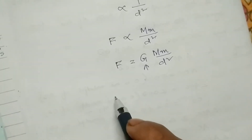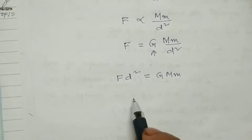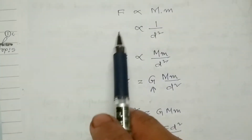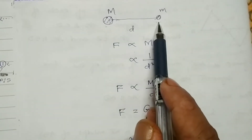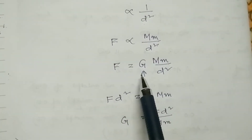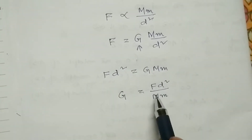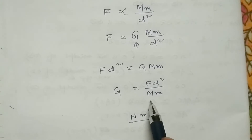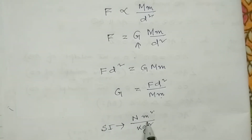Cross-multiplying the formula, we get F times d square equals G times M times m. So capital G equals F times d square divided by capital M times small m. The SI unit of force is Newton, SI unit of distance is meter, and the SI unit of mass is kg. So the SI unit of capital G will be Newton meter square by kg square.